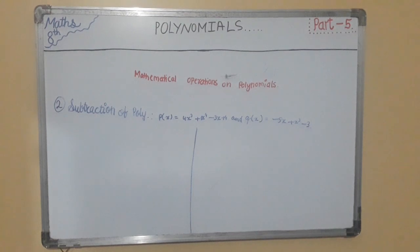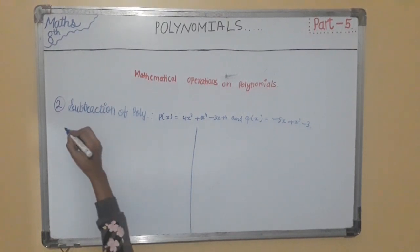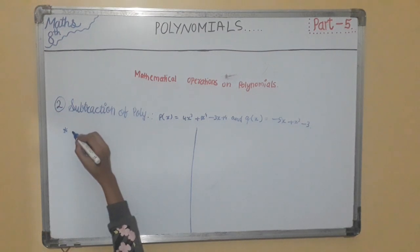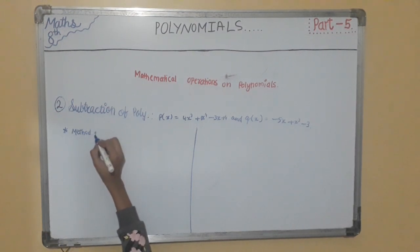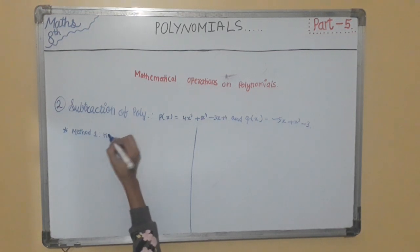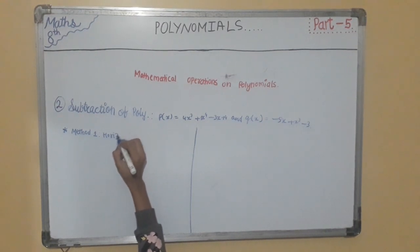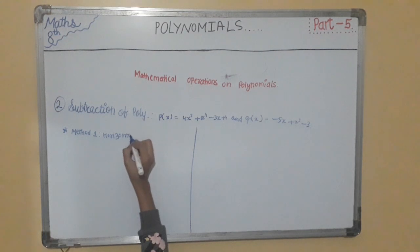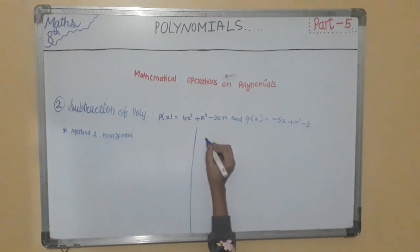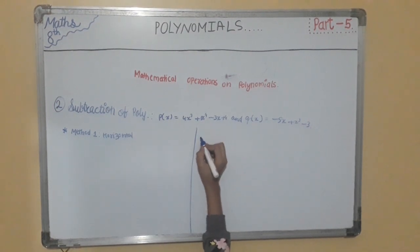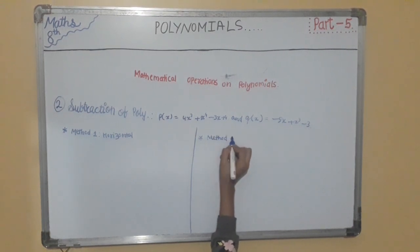First is method 1, that is horizontal way of subtracting the polynomials, and second is method 2, that is vertical way.